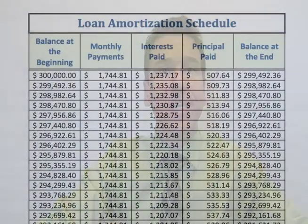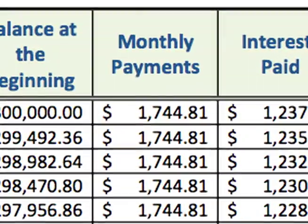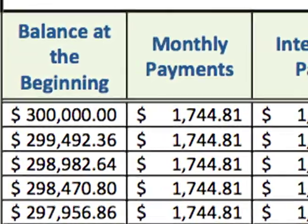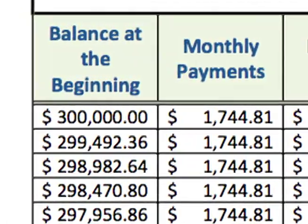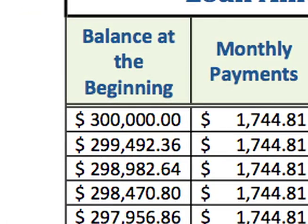First, you enter your payments in the second column — that is $1,744.81. Second, you enter the balance at the beginning, which is $300,000 for the first period.